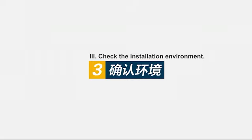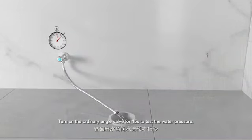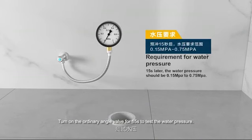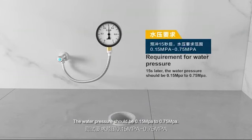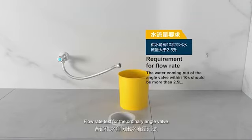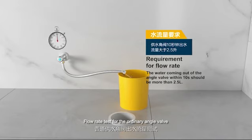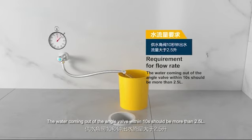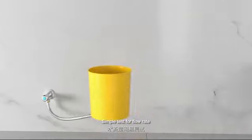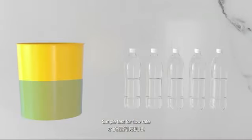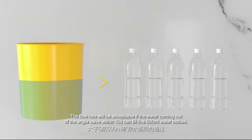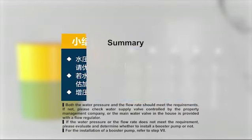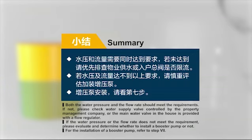Three: check the installation environment. Turn on the ordinary angle valve for 15 seconds to test the water pressure. The water pressure should be 0.15 MPa to 0.75 MPa. Flow rate test for the ordinary angle valve: the water coming out of the angle valve within 10 seconds should be more than 2.5 liters. Simple test for flow rate: the flow rate will be acceptable if the water coming out of the angle valve within 10 seconds can fill five 500 milliliter water bottles.